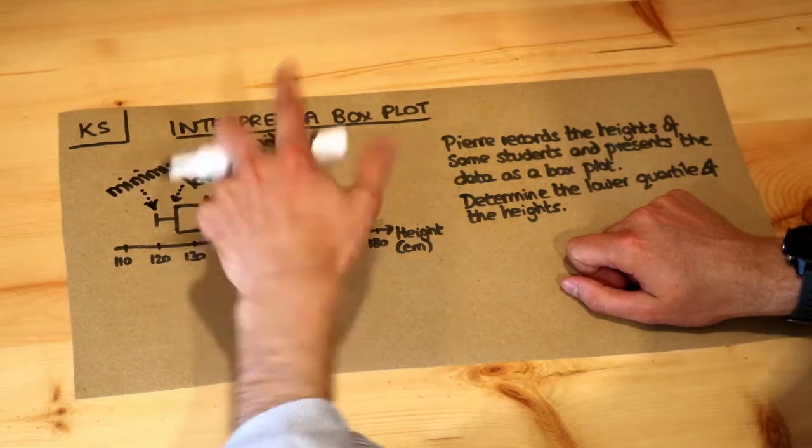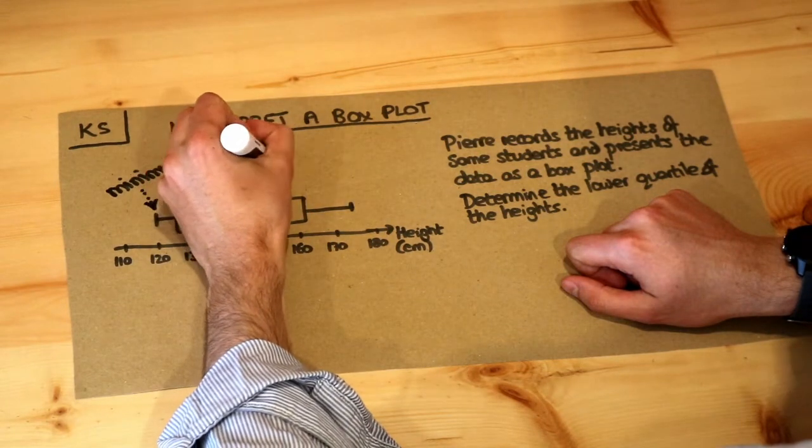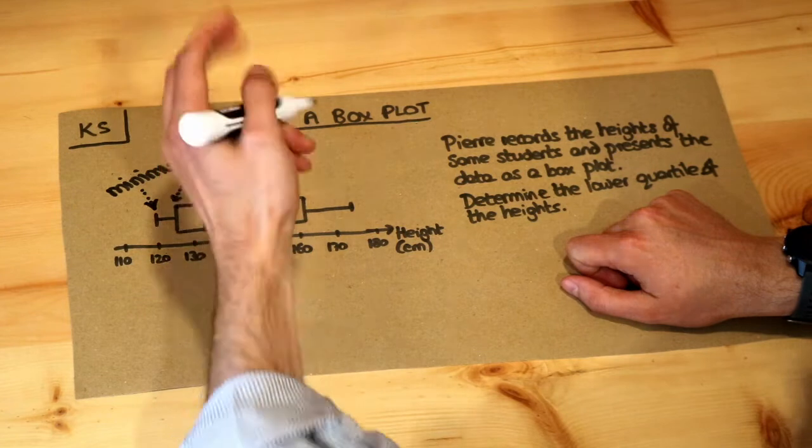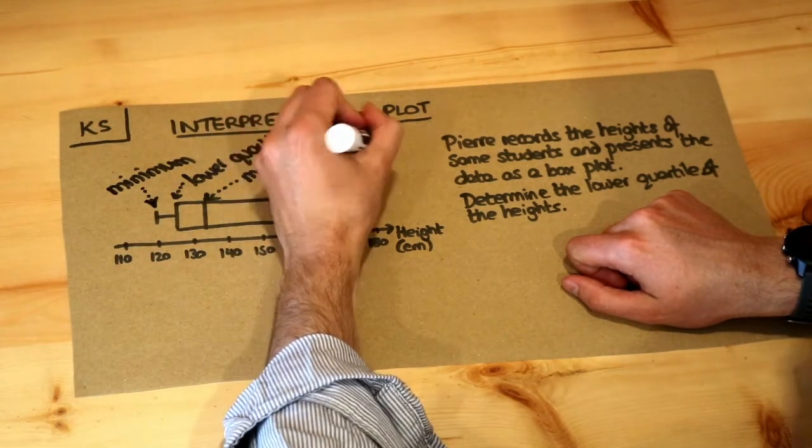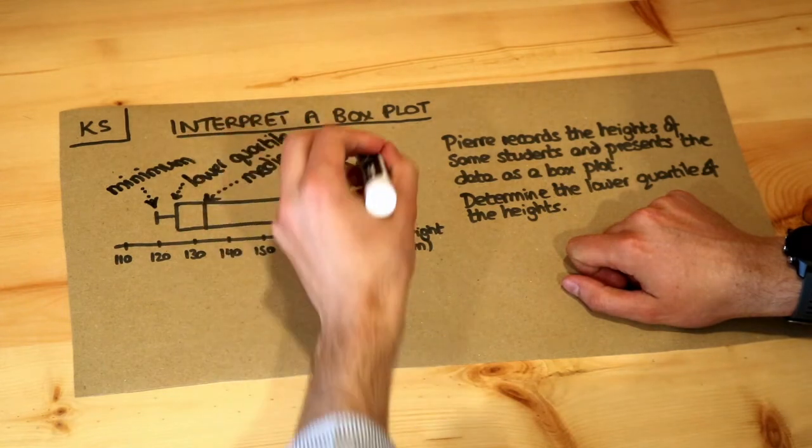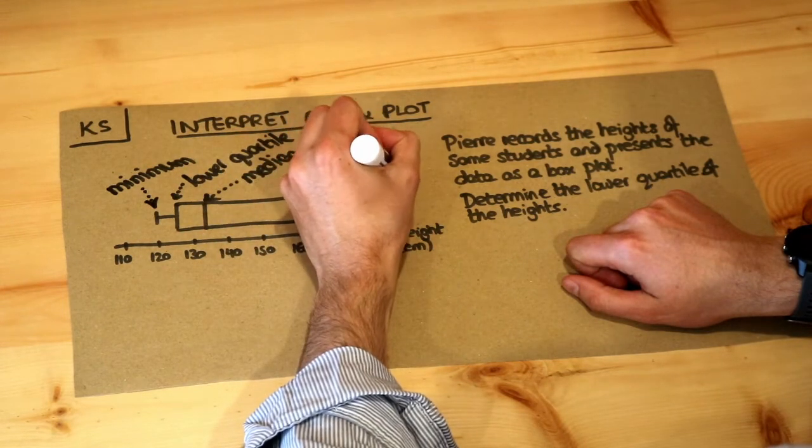Now the line somewhere in the middle of your box is the median, so that's halfway across your data. What is the middle value? The end of the box you might guess is the upper quartile and the top of this whisker as you might guess again is the maximum value.